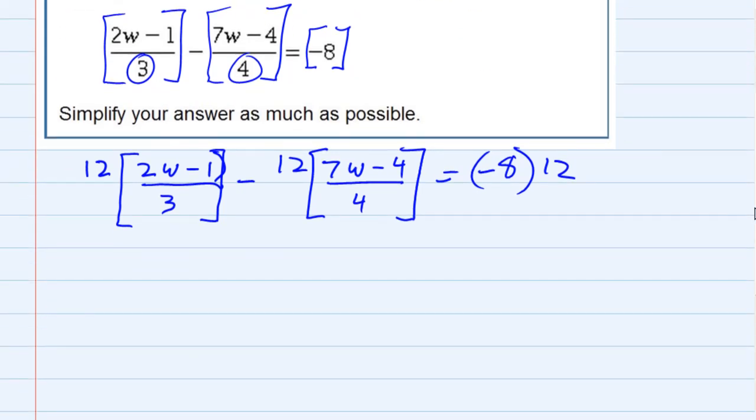So now, we see what happens whenever we multiply by 12. For the ones that have denominators, the denominator will cancel into that numerator. So, 3 goes into 12, 4 times.